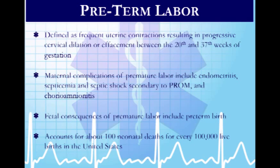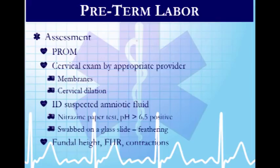Assessment for preterm labor includes evaluating rupture of membranes — was there a small bloody show or a lot of bleeding? Once at the hospital, an appropriate provider will check for membrane status and cervical dilation. If there is drainage, you have the ability to test it for pH.